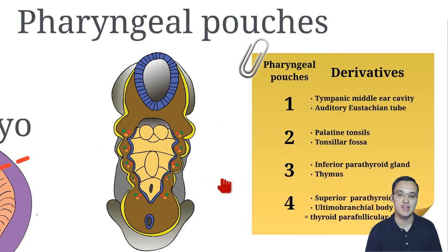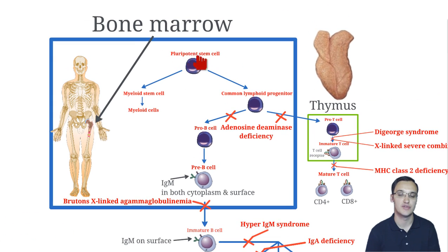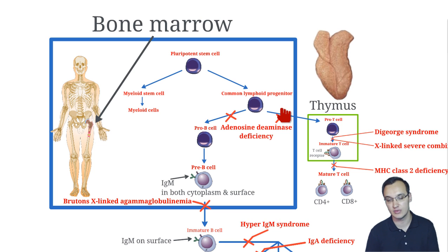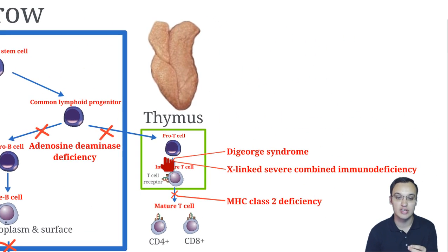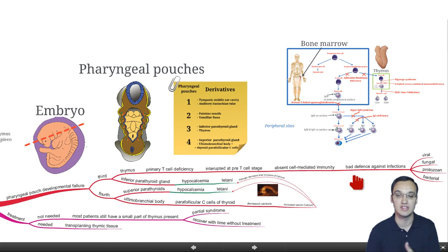Let's turn to the pre-T cell stage to explain what I meant. In the bone marrow, you have a pluripotent stem cell which gives rise to many different kinds of cells, including common lymphoid progenitor cells. These give rise to B cells and T cells in the bone marrow, but they need to mature into mature ones. The pro-T cells in the blood enter the thymus, where they mature first into immature T cells and then into mature T cells. DiGeorge syndrome blocks at this stage, so we don't have any mature T cells — and that's how the bad defense against infections occurs.